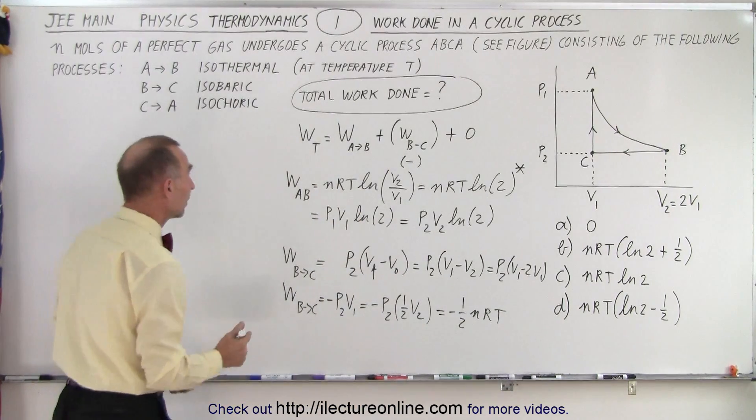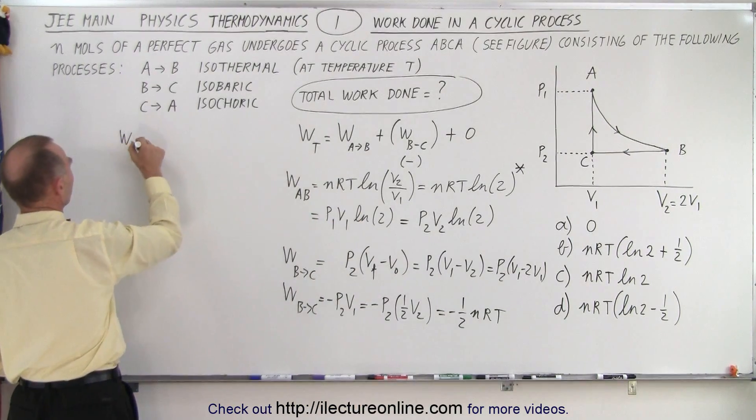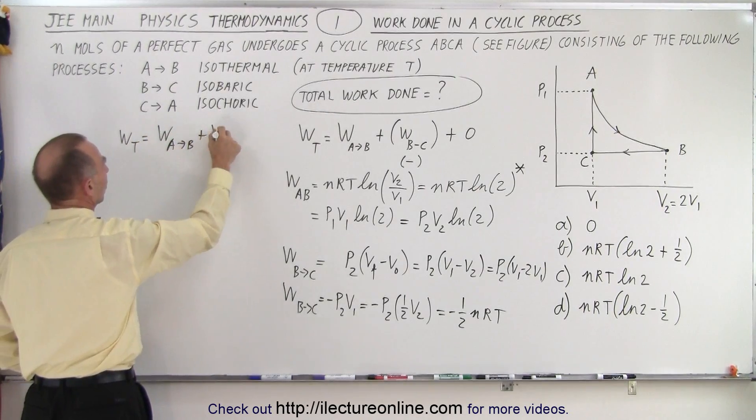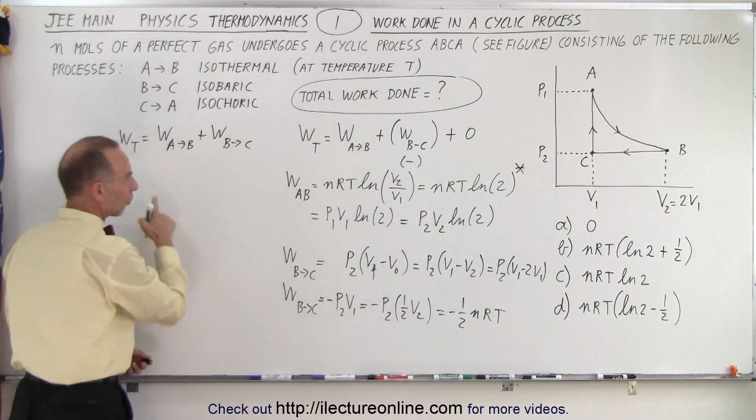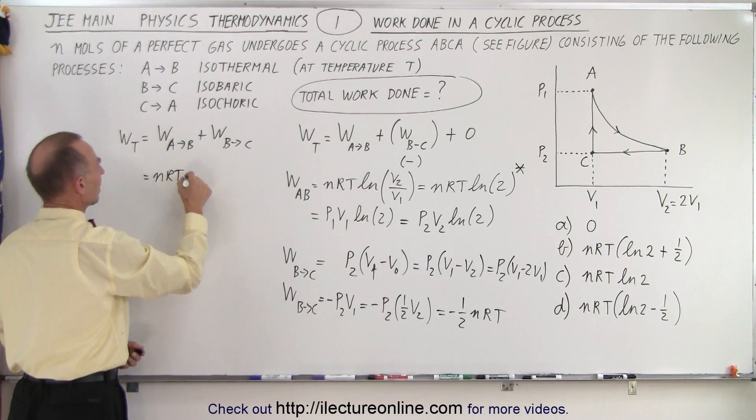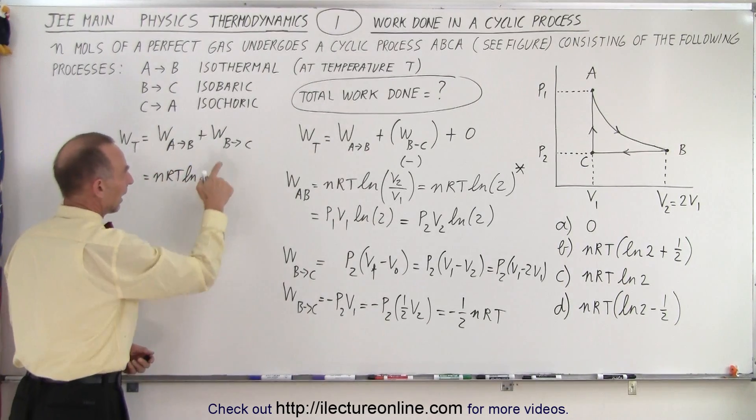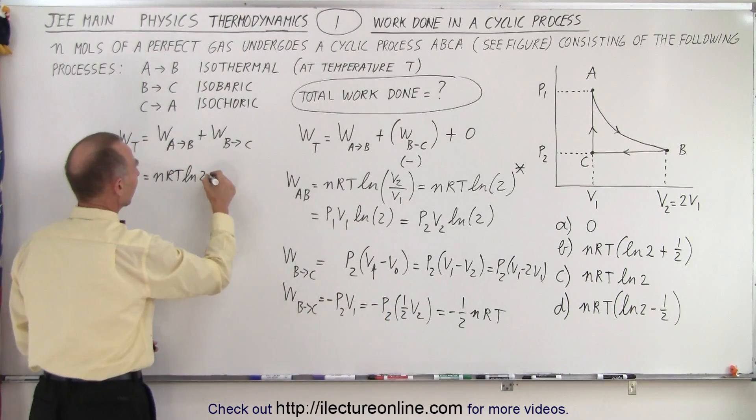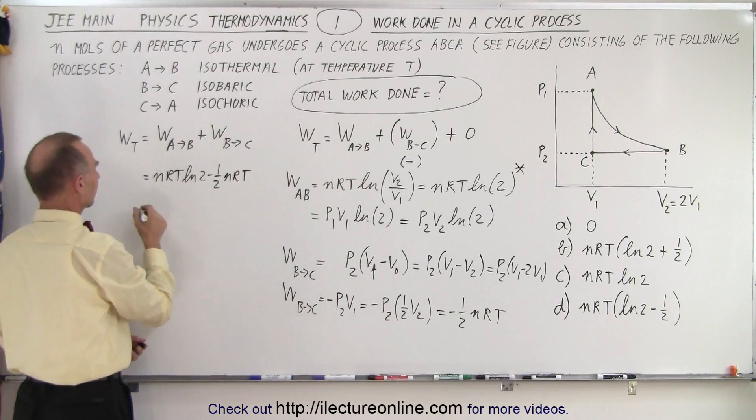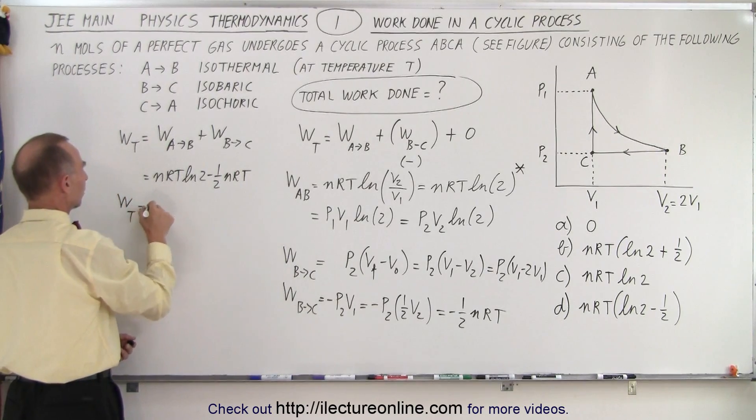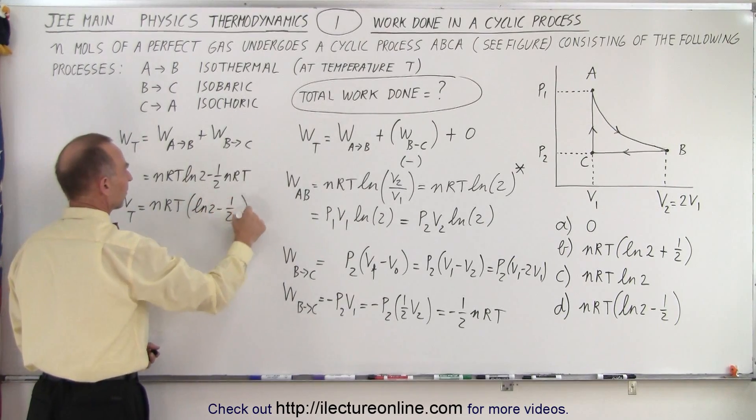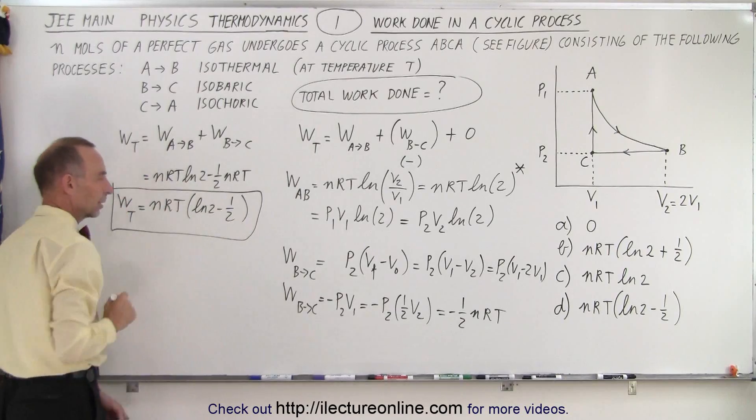So now all I have to do is add the two together, so now we have work total equals the work from A to B plus the work done from B to C. Going from A to B, I have nRT times the natural log of 2, and the work done from B to C is minus one half nRT. So when I factor out an nRT, the work total is equal to nRT times the natural log of 2 minus one half. And that is how we find the total work done.